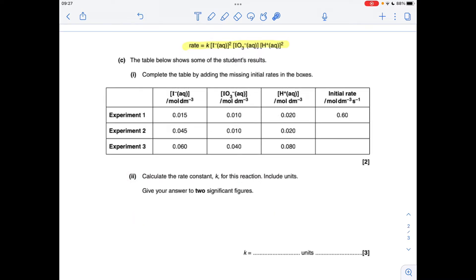Part C, we've got to fill in the table, first of all, for these missing initial rates. So if we look at experiment 2, the only thing that's changing is the concentration of I minus. What's happened to that? It's gone up threefold, but it's second order, so the rate will go up three squared, so it's going to go nine times higher. So nine times that.